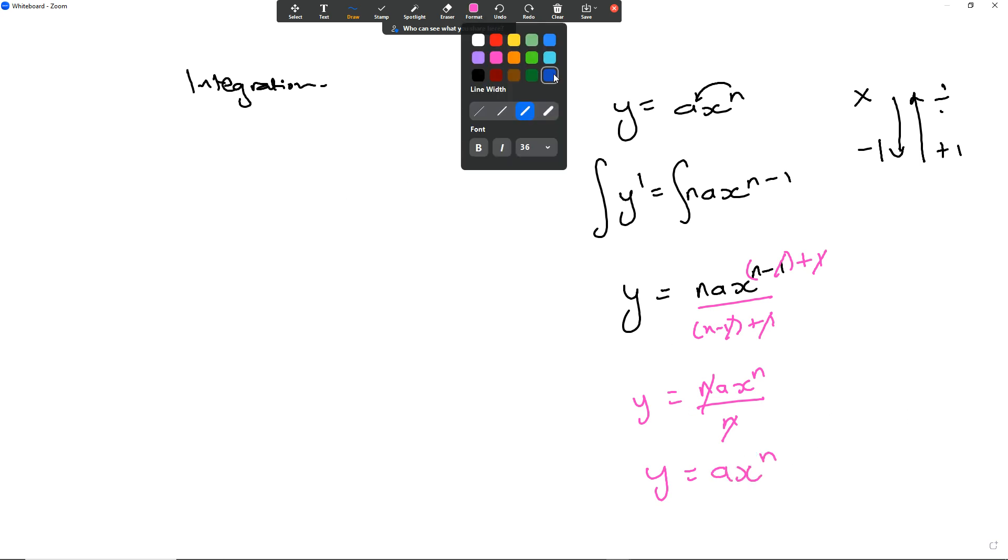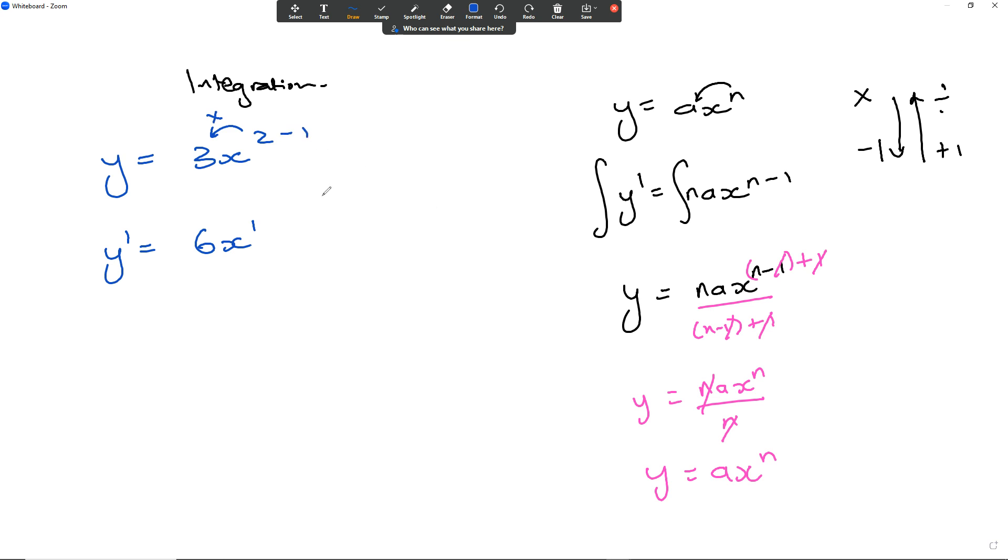A simple example: suppose I got y equals 3x squared. When I derive this, I get 6x to the power of 1, because that's multiply n minus 1 using the power rule.